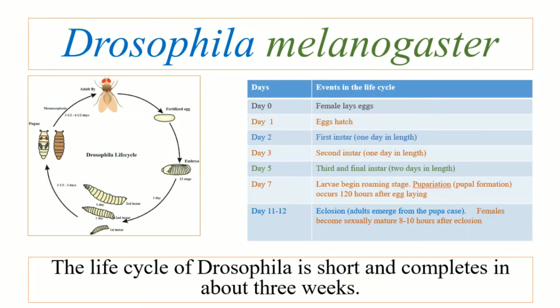Looking at the life cycle of Drosophila melanogaster, we can say that there is holometabolous metamorphosis, as it contains egg, instars, pupa, and adult stages.